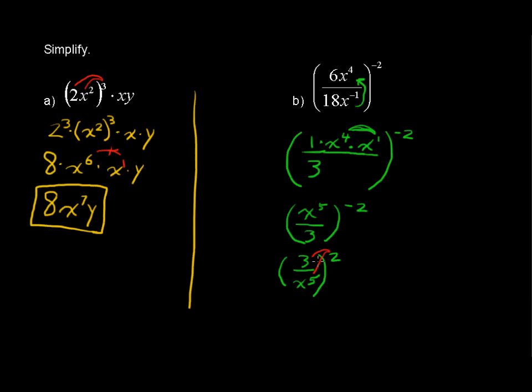So let's rewrite this as 3 squared. I'll write it over here. 3 squared over x to the 5th squared.